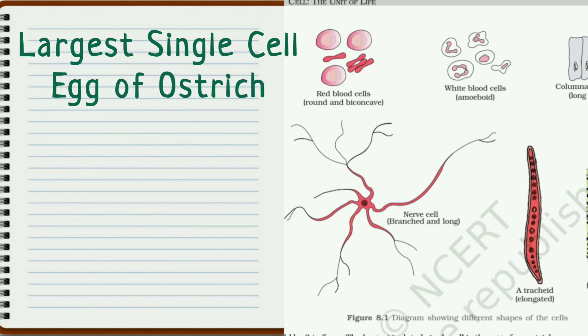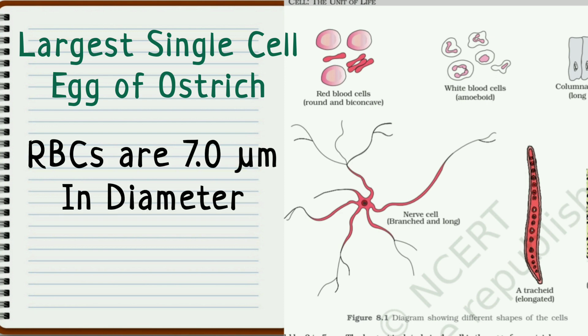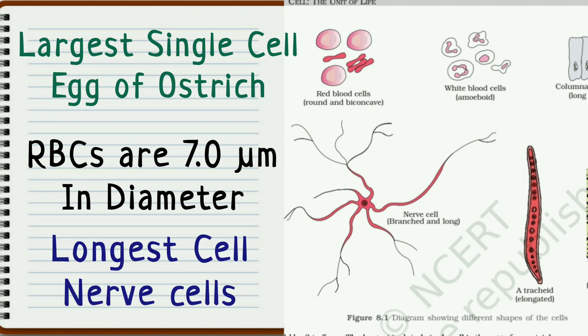The largest isolated single cell is the egg of an ostrich. Among multicellular organisms, the human blood cell is 7 micrometers in diameter. The longest cell is the nerve cell, and there are many types of cells present.